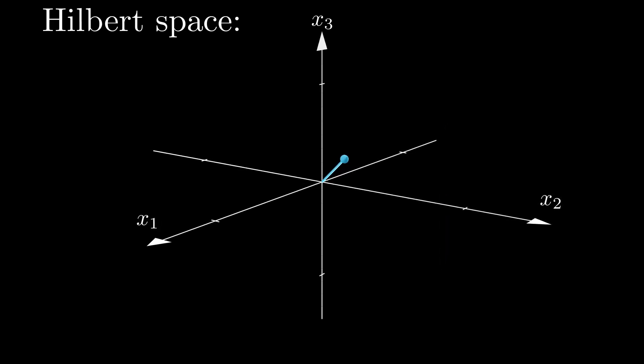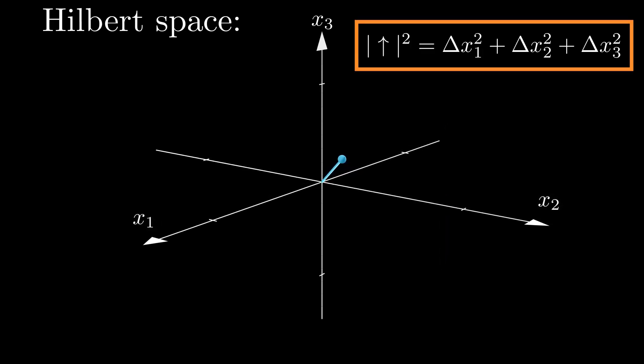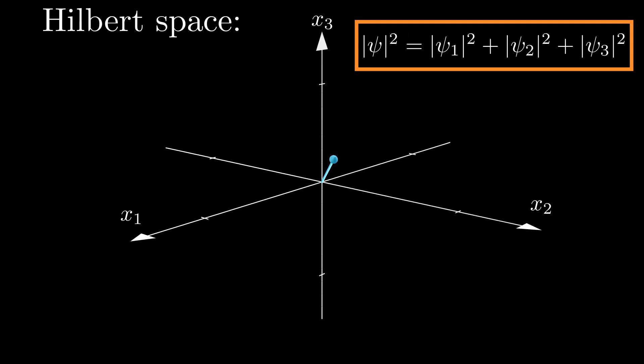From the Pythagorean theorem, we know that the sum of the squares of all vector components must then be equal to 1, so the normalization constraint only applies to squared wave functions, which is the result of the Born rule, a key postulate at the heart of quantum mechanics.